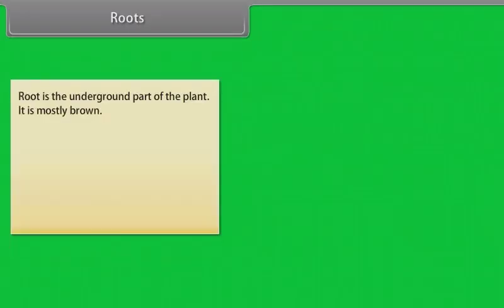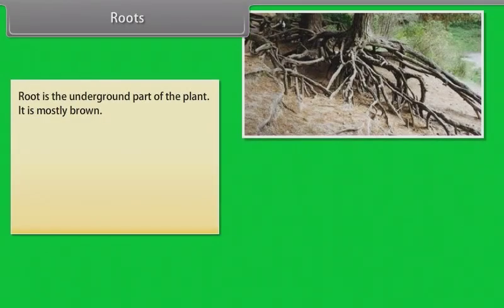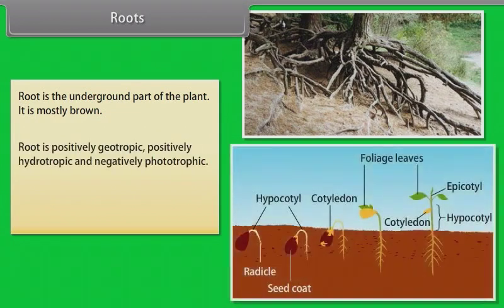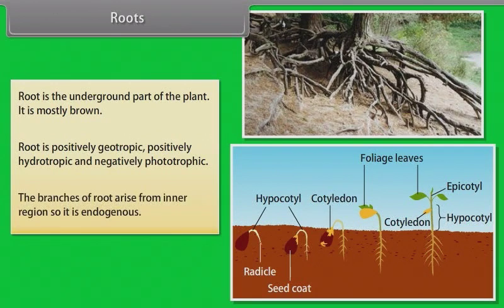Root is the underground part of the plant. It is mostly brown. Root is positively geotropic, positively hydrotropic and negatively phototropic. The branches of root arise from the inner region, so it is endogenous.